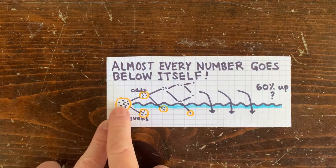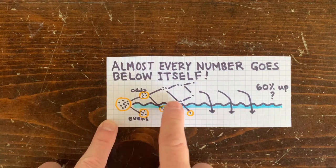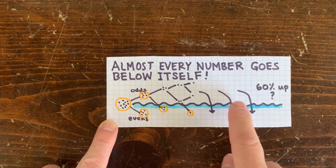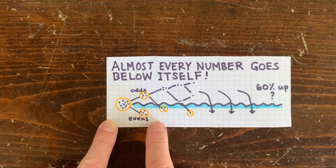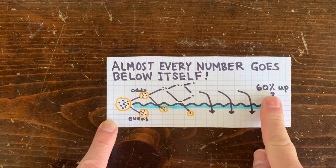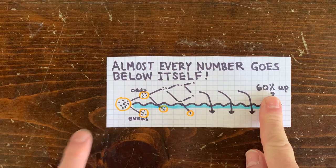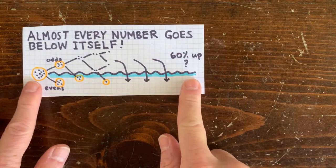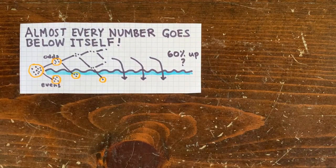That's because each start number up to 2 to the k has a unique initials up-down sequence. For a number to stay above itself, its sequence has to have at least 60% up moves. And as k gets large, a vanishing proportion of the numbers have that kind of a sequence.